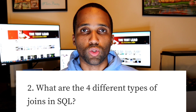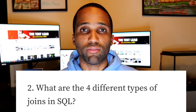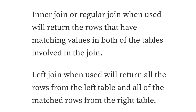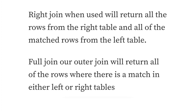Question 2: what are the four different types of joins in SQL? Inner join, or regular join, when used, will return the rows that have matching values in both of the tables involved in the join. Left join, when used, will return all the rows from the left table and all the matching rows from the right table. Right join, when used, will return all the rows from the right table and all the matching rows from the left table.